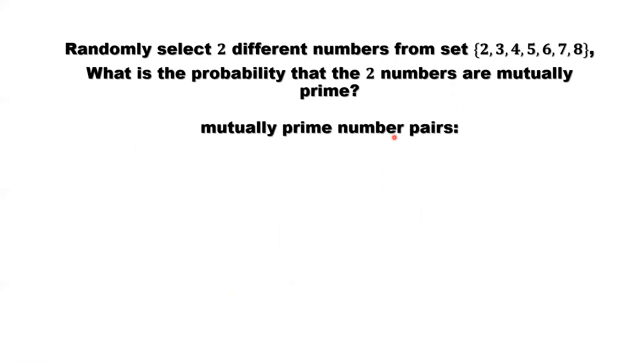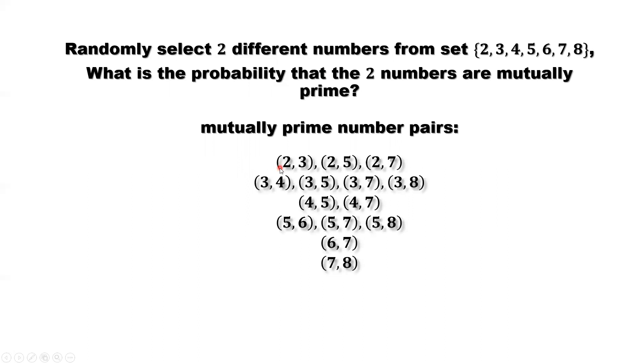Secondly, we need to count how many pairs those two numbers are mutually prime. We start counting from two. Look at two here. Which number is mutually prime with two? Three. Four is not, because four has a factor of two. Five, yes. Six, not. Six has two there as a factor. Seven, yes. So you have three here: one, two, three.